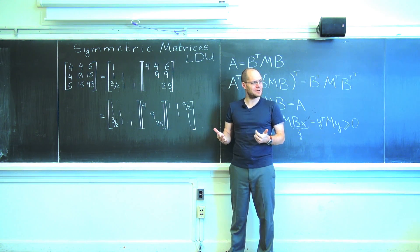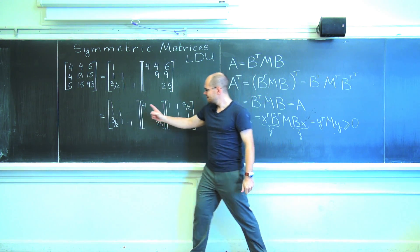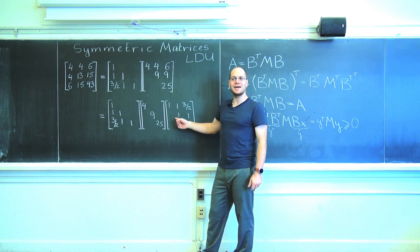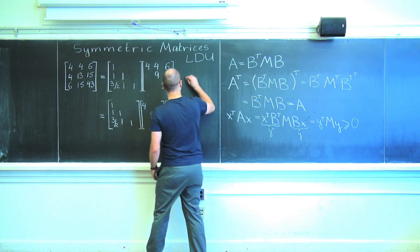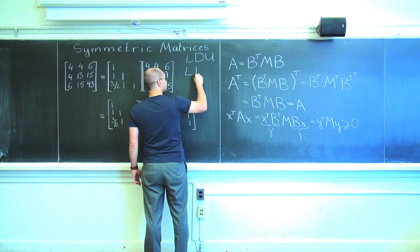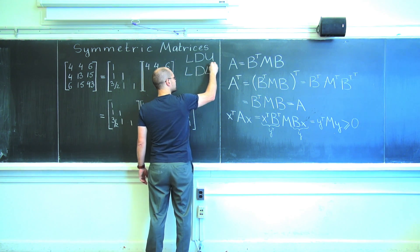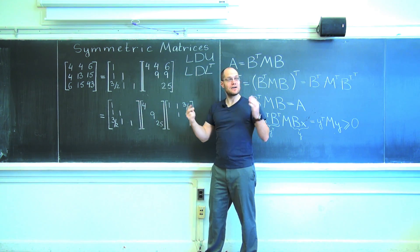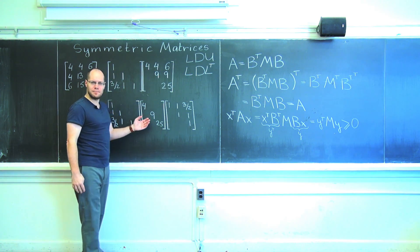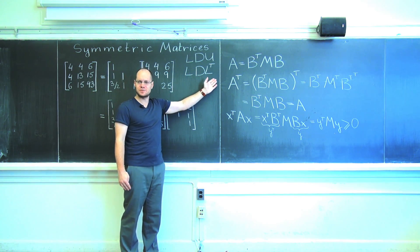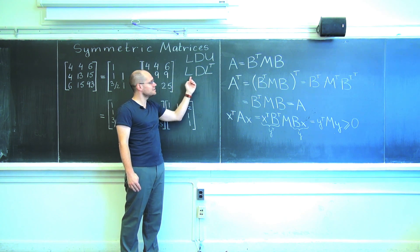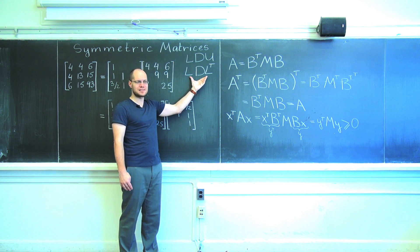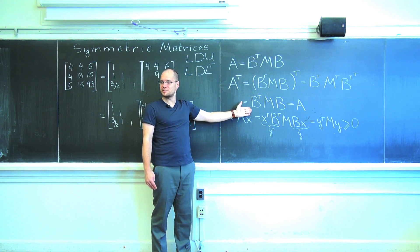Do you notice anything about it? Yes. This matrix and this one are the transposes of each other. That will happen only for symmetric matrices. You end up with L D L transpose. Now this goes both ways. If you do this for some matrix and you end up with L D L transpose then you will say well clearly this matrix is symmetric.